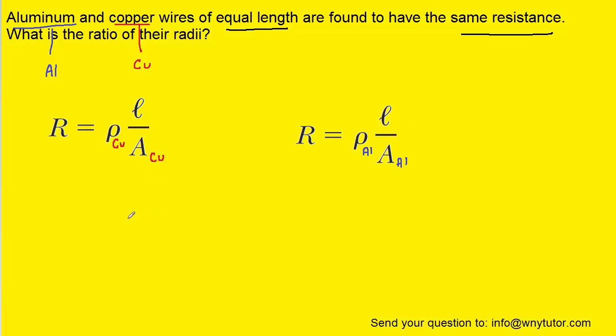We'll next make a comment about the area. It is generally assumed in these questions that the wires are cylindrically shaped, and when they refer to area in the formula, they're referring to the cross-sectional area of this end of the wire.